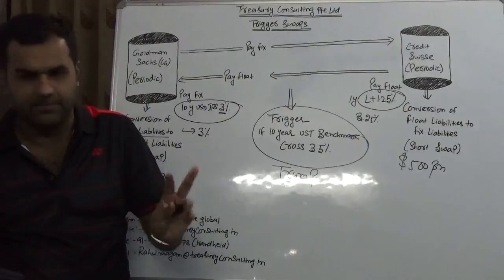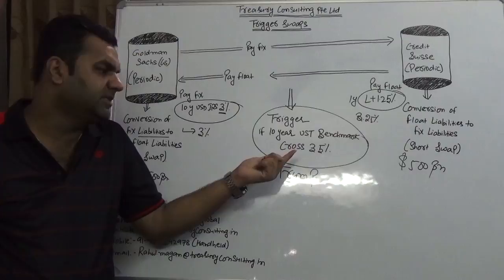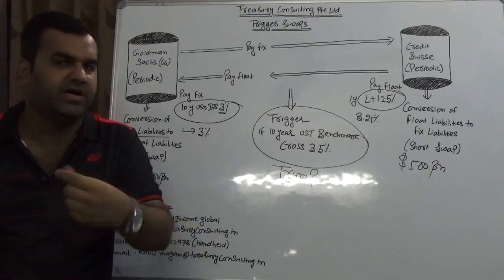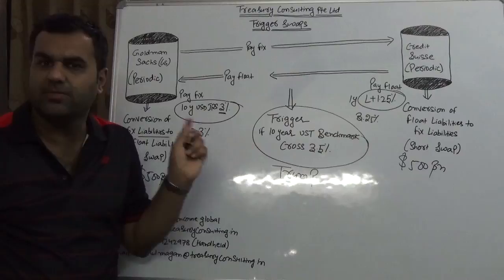Now they will set up a trigger. What is that trigger? 10-year USD benchmark. They said that if the 10-year USD benchmark crosses more than 3%, even if it touches 3.5%, then both of us have to wind up the deal. The reason being it's a trigger swap, not a total return swap. This is the trigger.